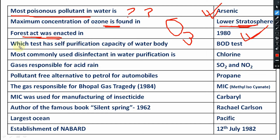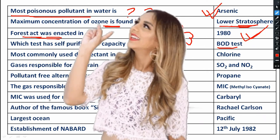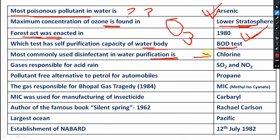Which test measures the self-purification capacity of a water body? That is your BOD test — Biological Oxygen Demand test. They have this self-purification capacity. Most commonly used disinfectant in water purification is your chlorine. Very very important.